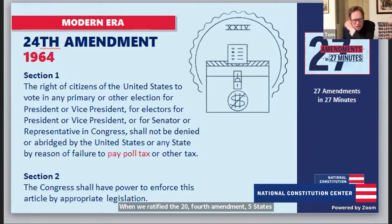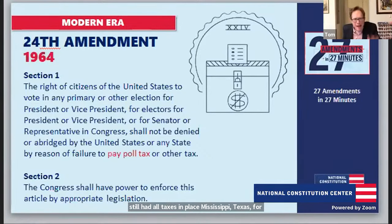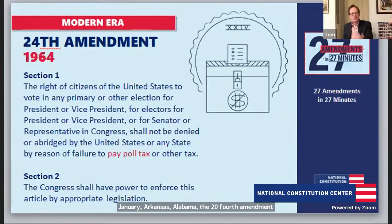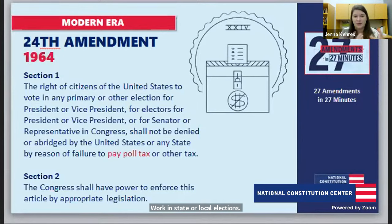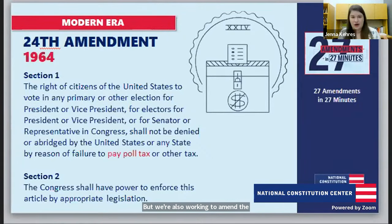The Civil Rights movement was obviously working through the Voting Rights Act and Civil Rights Act, but also amending the Constitution to broaden these rights for all Americans. The 25th Amendment, ratified in 1967 — fans of The West Wing will know this one — deals with presidential succession and incapacity, growing in part out of concerns from JFK's assassination in November 1963.